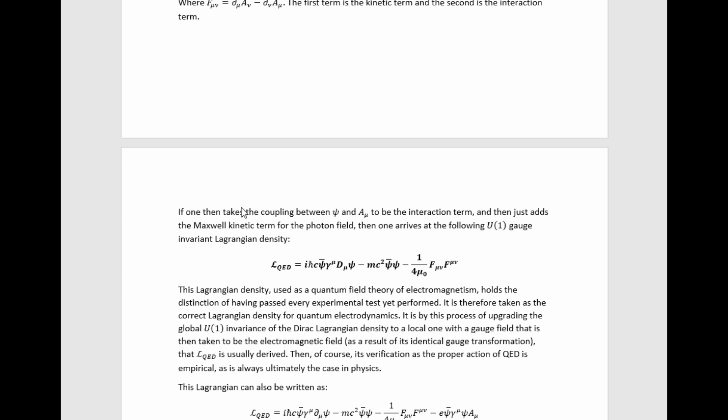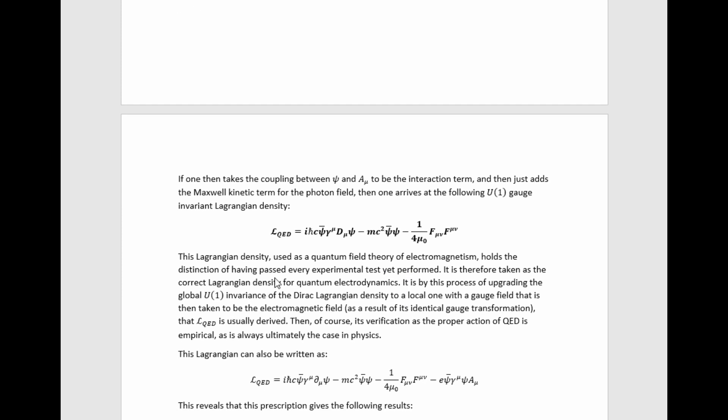Then one arrives at the following U1 gauge invariant Lagrangian density given here. This is gauge invariant. We've just figured out how to make this U1 gauge invariant. This Lagrangian density used as a quantum field theory for electromagnetism holds the distinction of having passed every experimental test yet performed. It is therefore taken as the correct Lagrangian density for quantum electrodynamics. It is by this process of upgrading the global U1 invariance of the Dirac Lagrangian density to its local version with a gauge field that is then taken to be the electromagnetic field that the quantum electrodynamics Lagrangian density is usually derived.